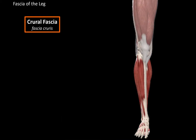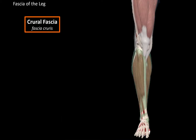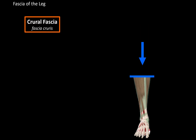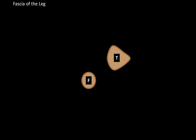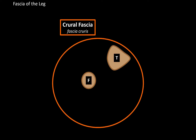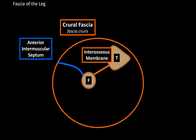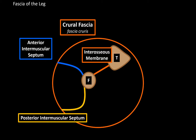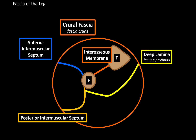Now let's do the fascia of the leg, which consists of the crural fascia. If we make a cross section and look at the leg from this perspective, we'll see the tibia and the fibula, with the crural fascia around them. Between the tibia and fibula is the interosseous membrane, then the anterior intermuscular septum and a posterior intermuscular septum, as well as a deep lamina separating the posterior compartments into two layers.